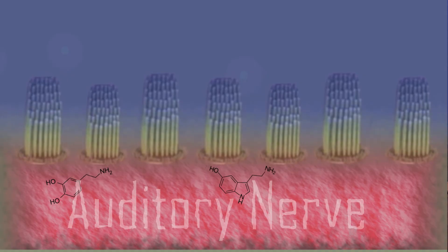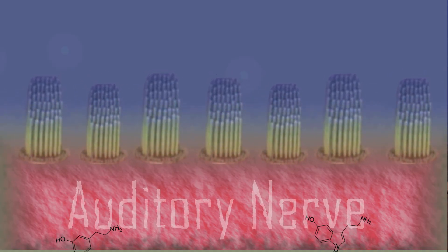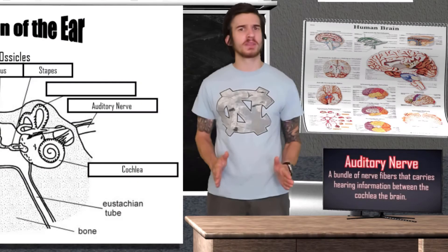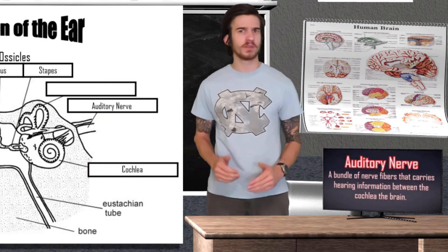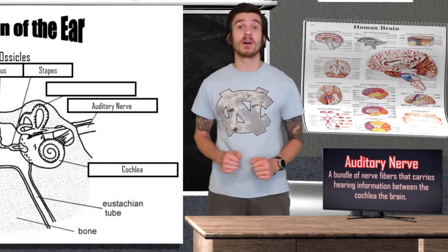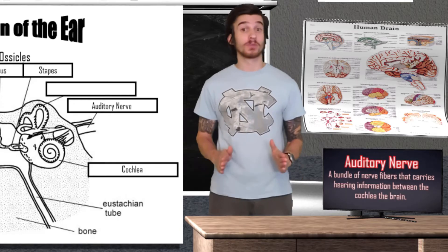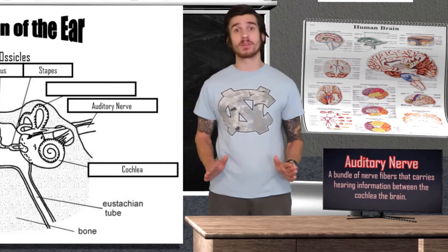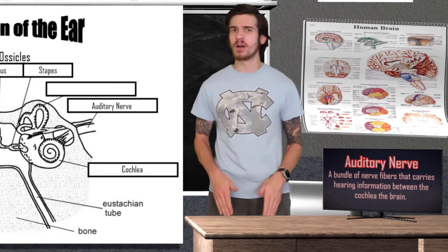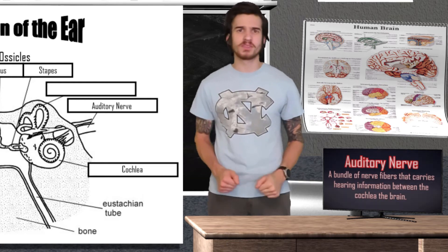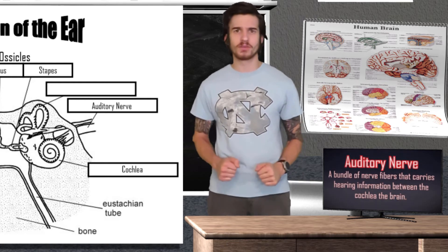As the hair bundles attached to the cell move, ions enter through the top of the cell, which causes the release of different chemicals at the bottom of the cell. These chemicals then bind to an auditory nerve cell and create an electrical signal. This signal will then travel along the auditory nerve to the brain. Just like with sight where different cones were responsible for different colors, depending on the location of the hair cells in the cochlea determines what type of pitch they are responsible for detecting. The electrical signal then reaches the thalamus, where it is directed to its final destination of the temporal lobe, which will then interpret the message as a sound that we recognize and understand.